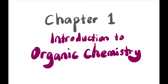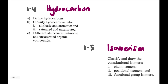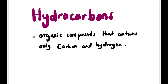Hi guys, welcome back to the channel. We're still in Chapter 1: Introduction to Organic Chemistry, and today we're going to focus on 1.4 Hydrocarbons and 1.5 Isomerism. At the end of this lesson you should be able to define hydrocarbons, classify hydrocarbons into aliphatic and aromatic, also saturated and unsaturated, and classify and draw constitutional isomers which consist of chain, positional, and functional group isomers.